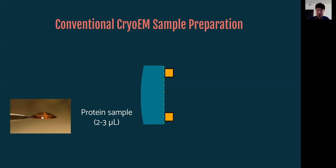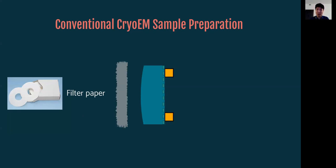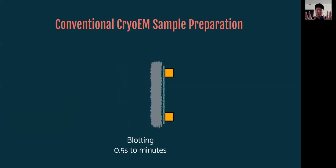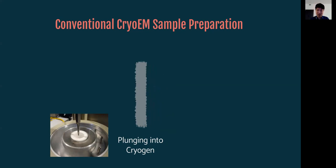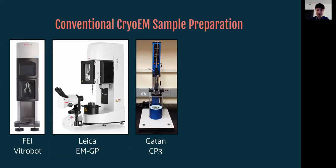And this is conventionally done using filter paper. So we actually push a filter paper against the grid. And this process called blotting actually occurs and the excess liquid is wicked away. And you're left with a very thin film of liquid present between the holes inside the grid. And this takes around 0.5 seconds to minutes. And once that is done, you pull away the filter paper. You plunge the whole grid into liquid cryogen and freeze it. And then your grid is now ready to go and be imaged in the microscope.